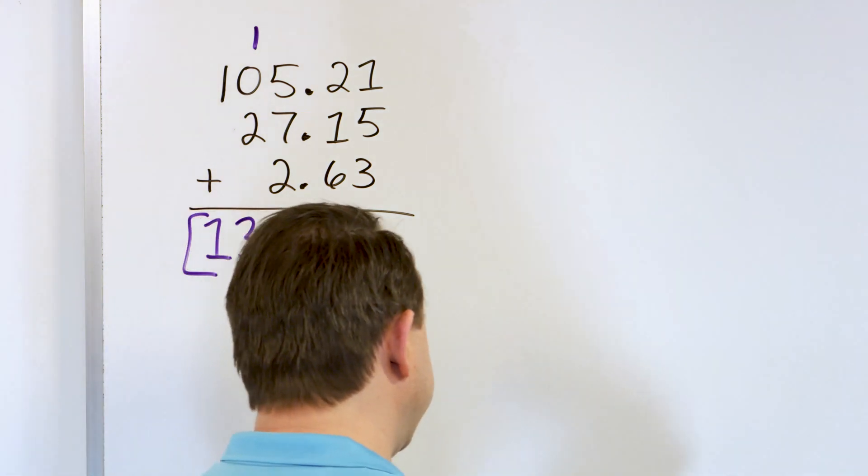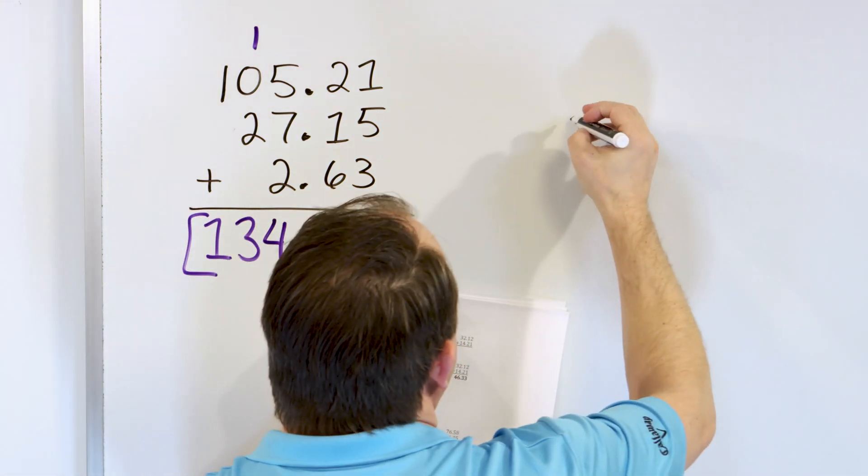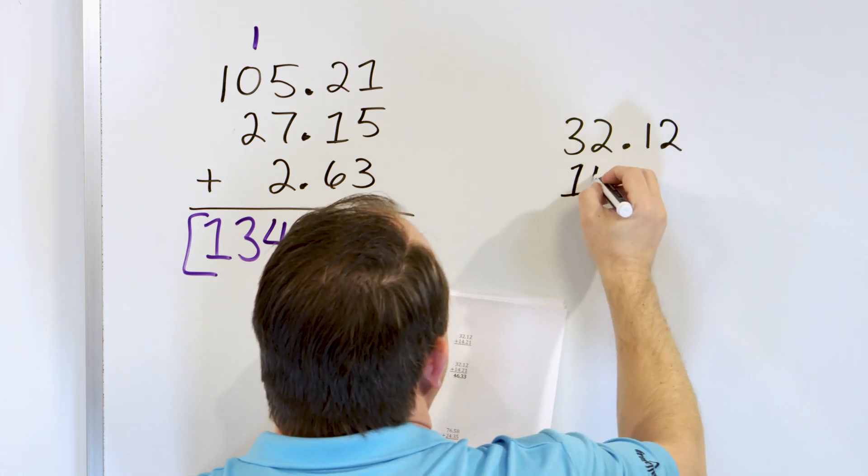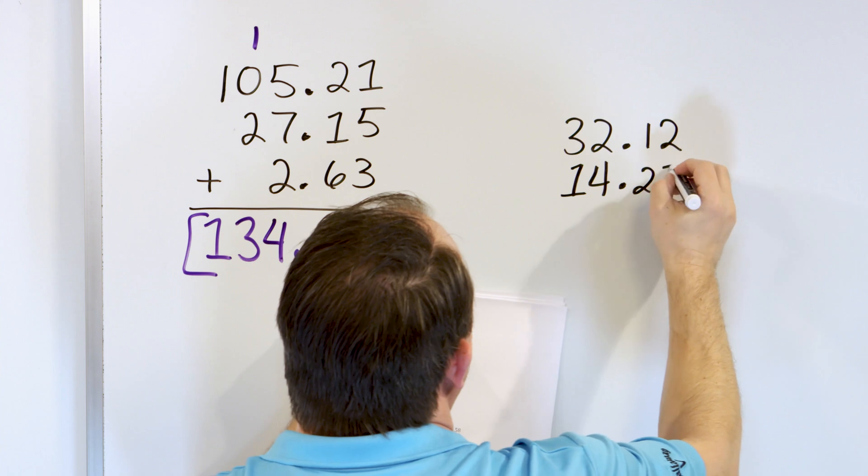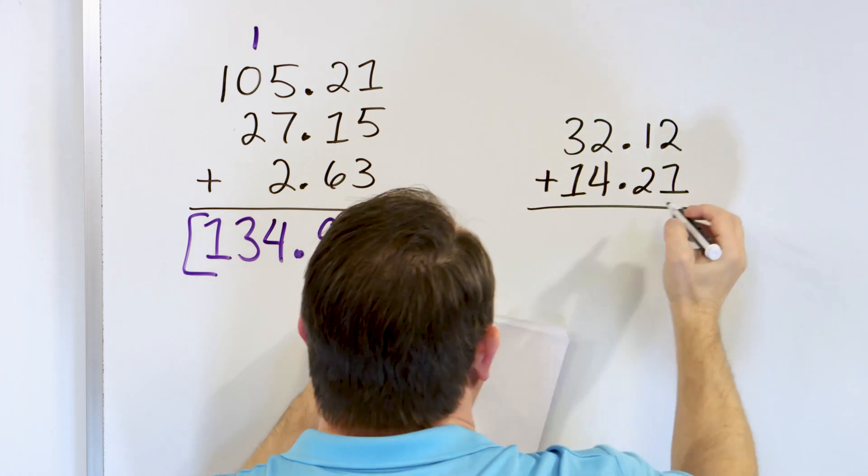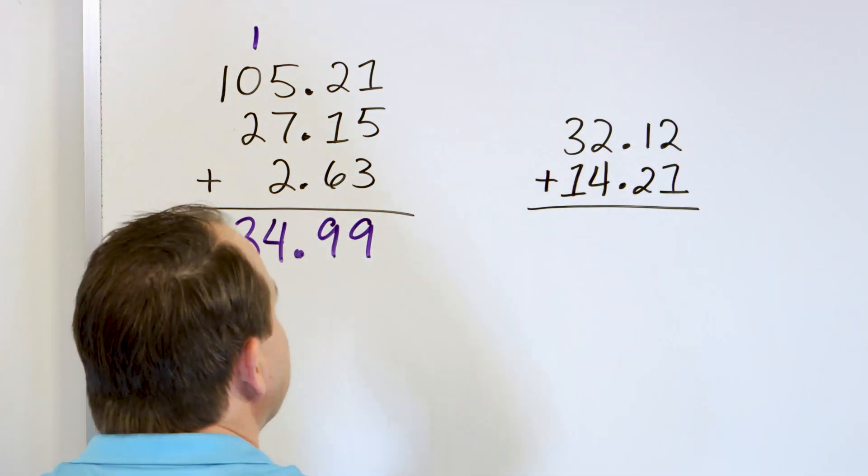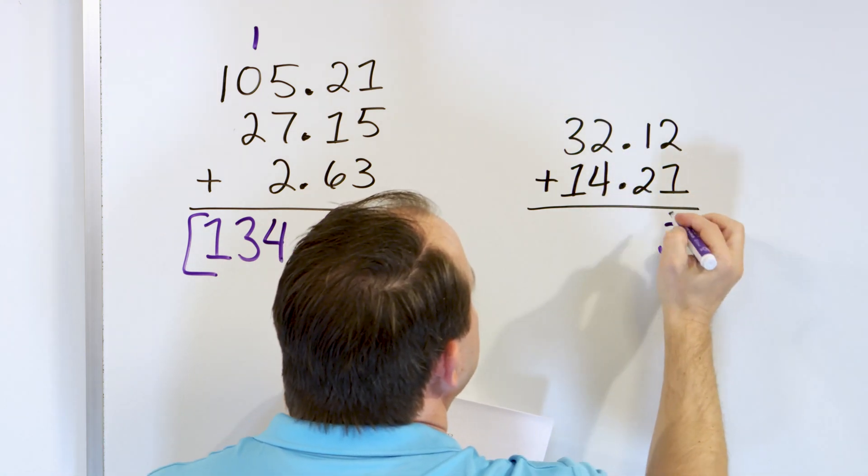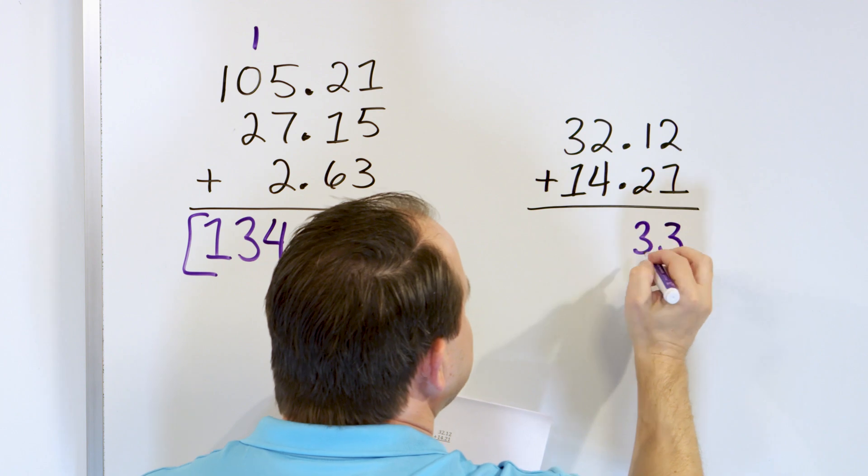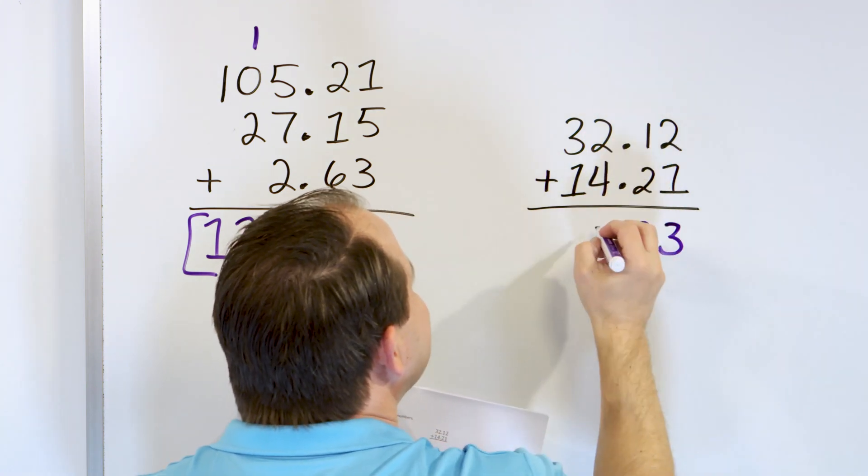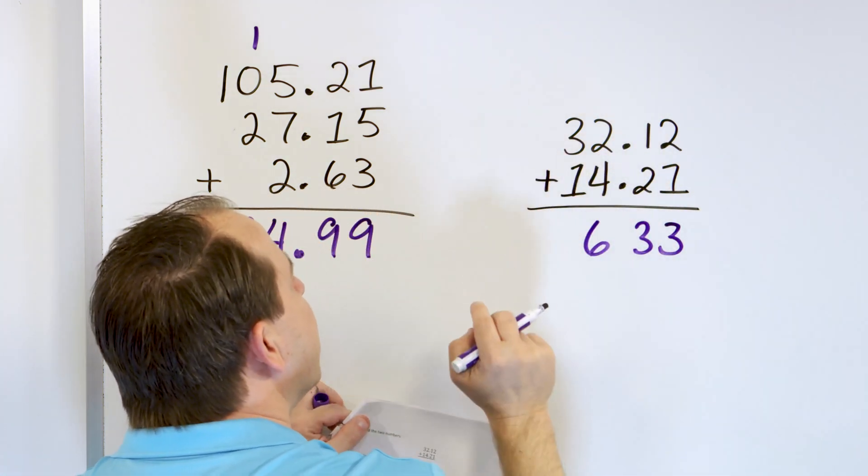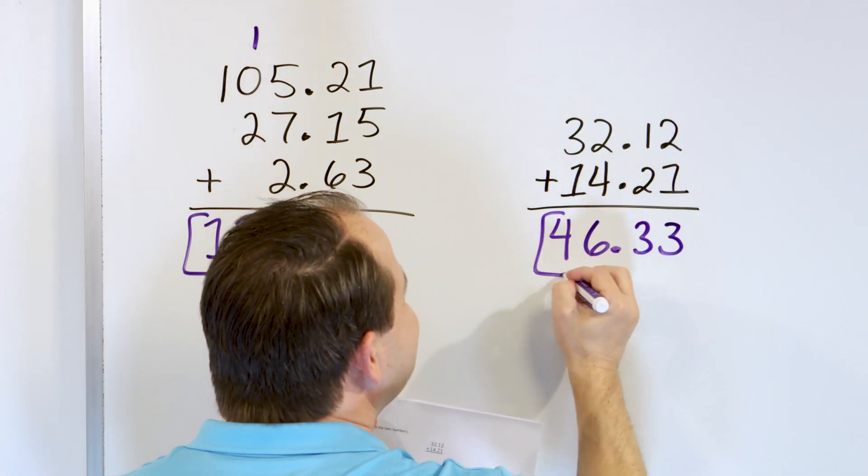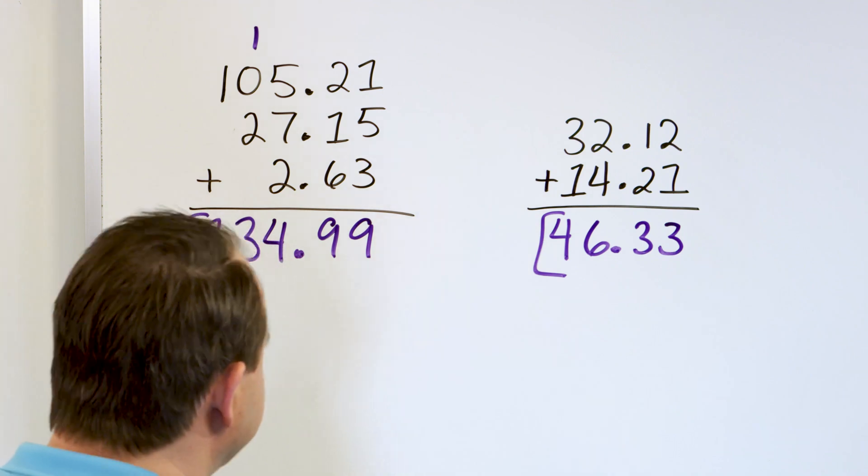Next problem. Let's take a look at the following. Let's say we had 32.12 and 14.21. What do we have? Start in the right column. The decimals, again, are lined up. 2 plus 1 is 3. 2 plus 1, again, is 3. 4, 5, 6. 6 goes here. 3, one more is 4. And the decimal just flows into the answer 46.33.